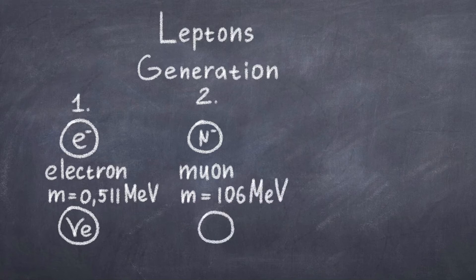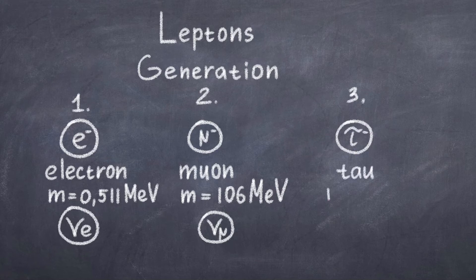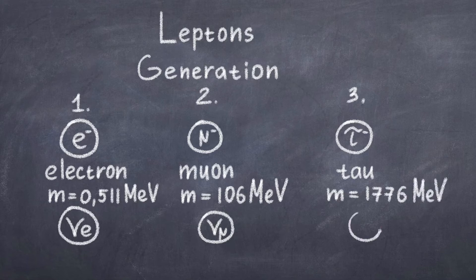Its bigger brother from the second and third generation are called the muon and tau particles. These particles are much heavier and the muon has a mass of 106 megaelectronvolt and the tau particle is even heavier at 1776 megaelectronvolt.